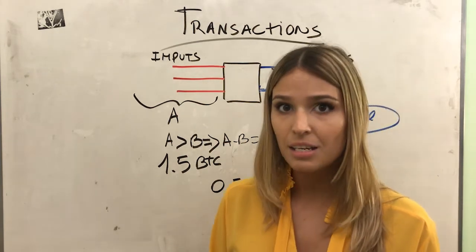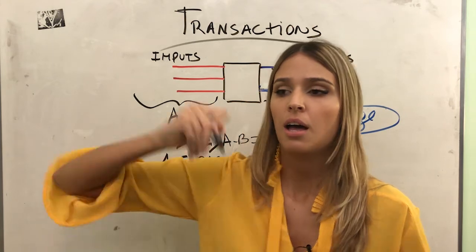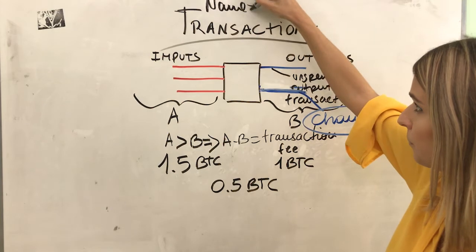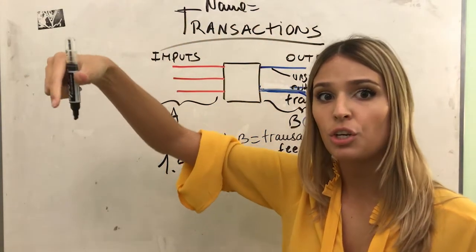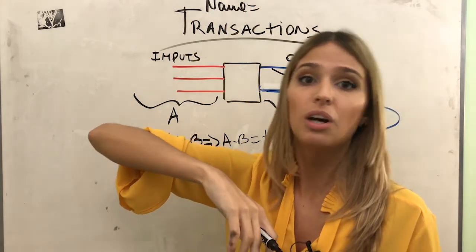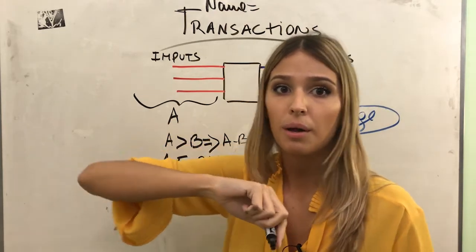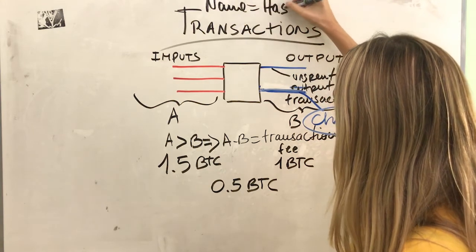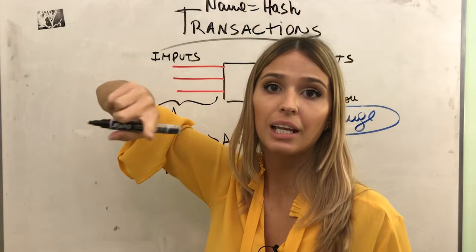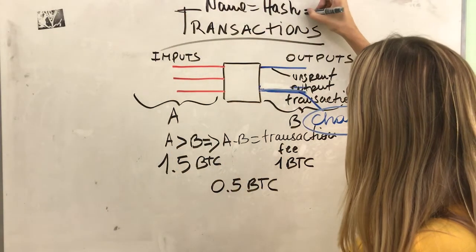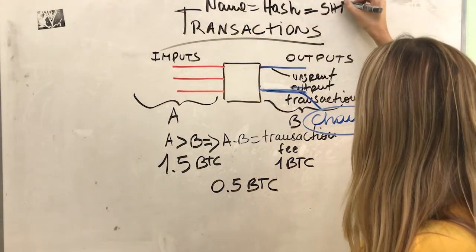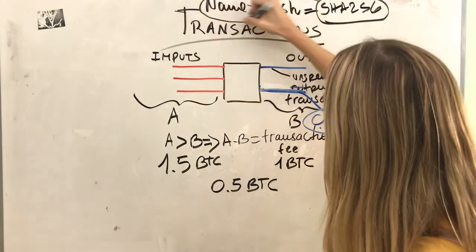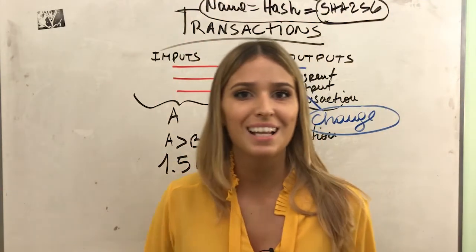And before we end and go to the best part, which is the next video, the name of this transaction - each transaction has a name. The message has a name. And the name is not going to be the message itself because it's way too long. Remember, it's all about messages. It's going to be a hash of that message, which you're going to learn in the next video. Go and check it out. And in Bitcoin, we use SHA-256. This is super interesting. This information is going to take your knowledge to the next level.